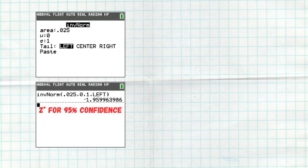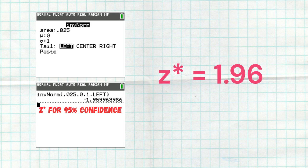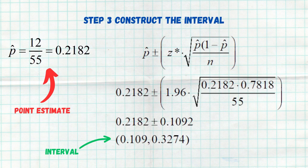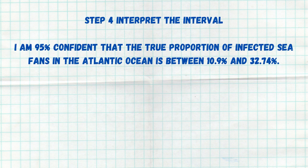95% of samples in the middle, 5% left out, two and a half at the bottom, two and a half at the top — so invert norm of 0.025 gives us 1.96. The standard error forms a giant square root: we take P hat of 0.2182, one minus P hat is 0.7818, divided by sample size 55. That gives us a margin of error of 0.1092, or about 11%. Taking our P hat and adding and subtracting that margin of error gives us a bottom of 0.109 and a top of 0.3274. I'm 95% confident the true proportion of infected sea fans in the Atlantic Ocean is somewhere between 10.9% and 32.74%.